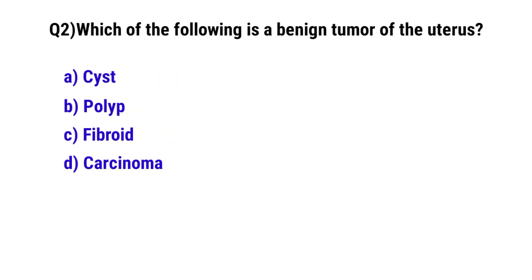Question No. 2: Which of the following is a benign tumor of the uterus? The correct option is C: Fibroid.